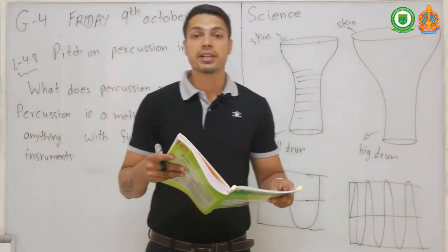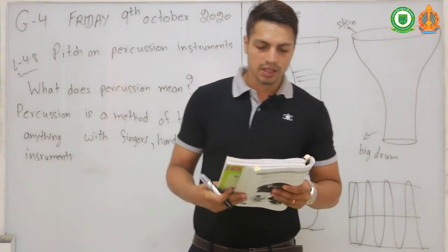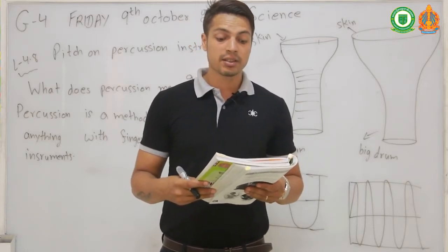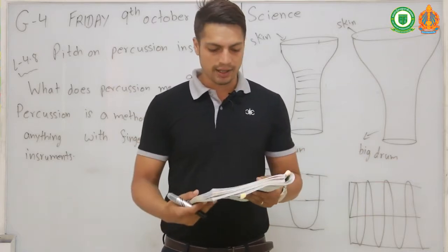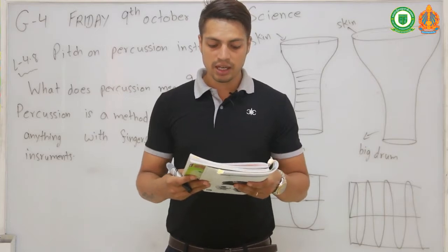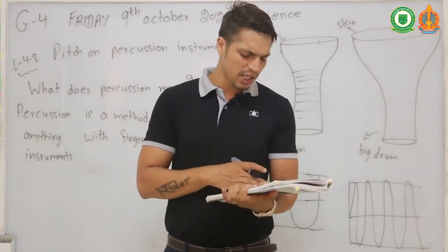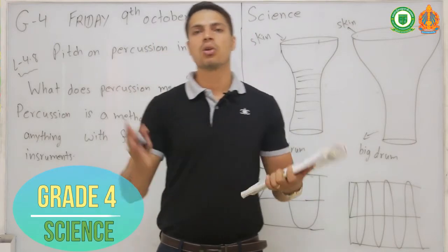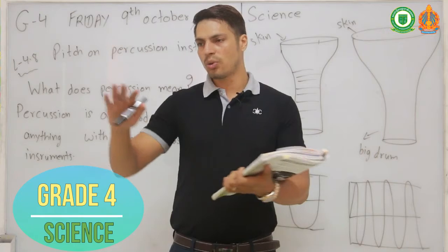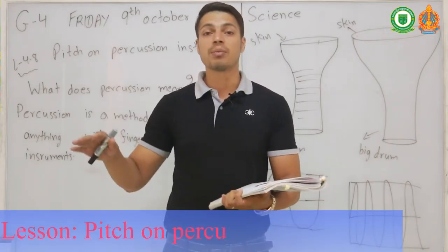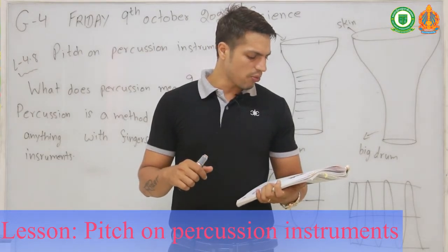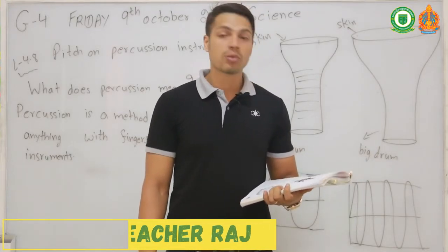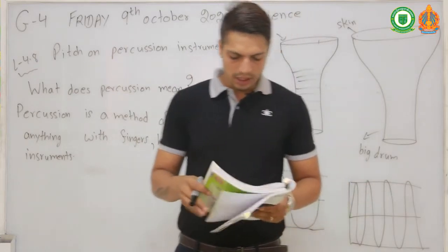Some drums have a skin stretched over the top. When you stretch the skin tightly, it makes vibrations quickly. The drums in the steel band are made from steel metal oil drums and come in different sizes. When you hit the top of one of the drums, the metal top vibrates and makes a sound. The air trapped in the drum makes the sound loud.